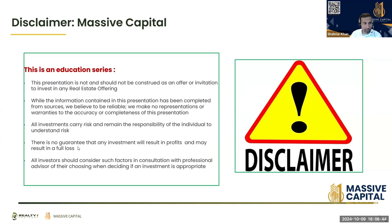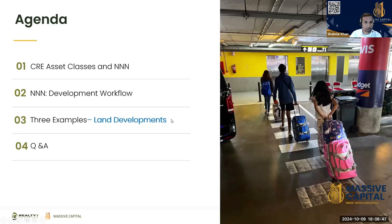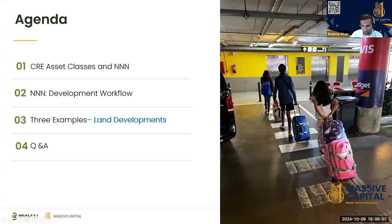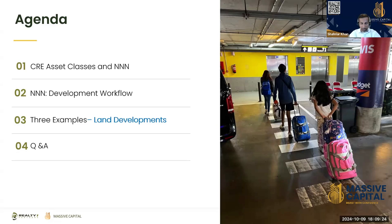Tonight's agenda covers asset classes, specifically triple net and single family, then we'll talk through development workflow and land developments with about four examples. The picture on the right is me and my family — every summer we go out for vacation, and that's one from Europe. It's impressive how operationally lean we've gotten over time, traveling two or three weeks with just a carry-on and a backpack.